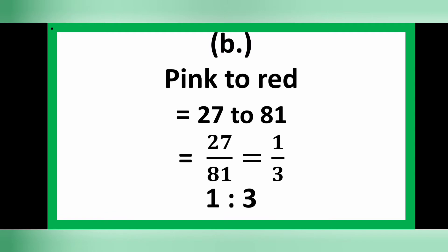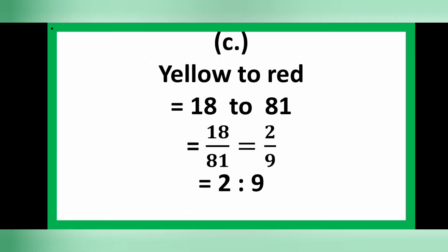The second part is to find the ratio of pink to red. There are 27 persons wearing pink shirts and 81 persons wearing red shirts, so the ratio is 27 to 81. As a fraction: 27 over 81, which simplifies to 1 over 3. So the ratio of pink to red is 1 to 3.